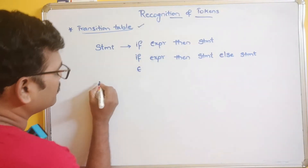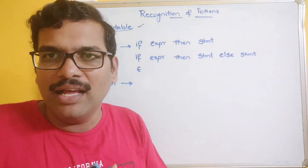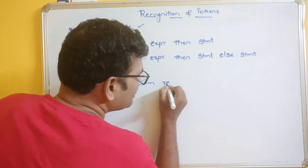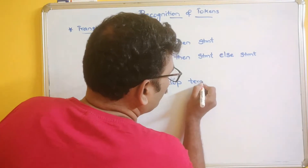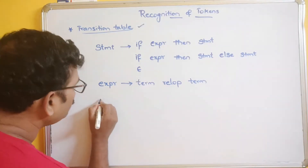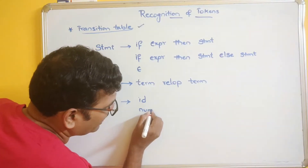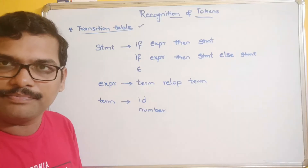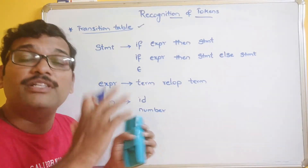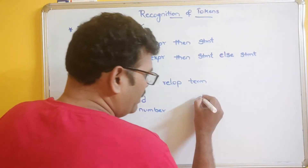What is an expression? An expression means if there is any operator between two operands, it will be evaluated. It can be represented as a term followed by a relational operator followed by another term. A term can be represented as an identifier — which includes variables or constants — or it may be a number directly.